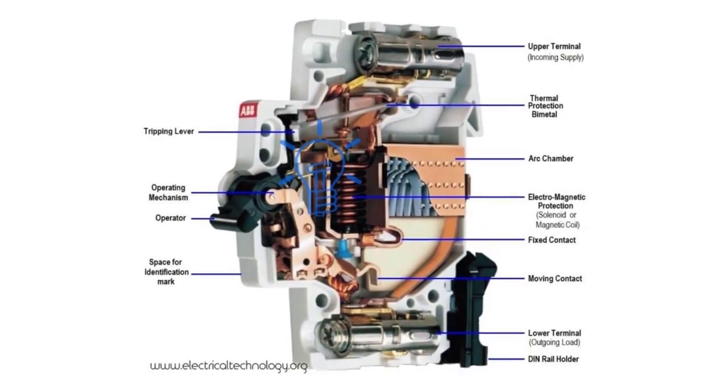Thermal magnetic circuit breakers, like miniature circuit breakers, provide protection against both overload and short circuit. The thermal element inside the breaker protects the circuit against overload, and the magnetic element protects the circuit against short-circuit.